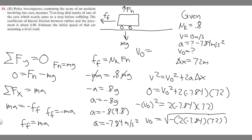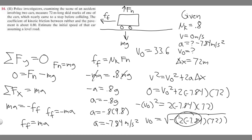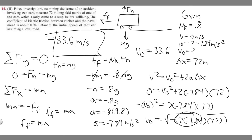Taking the square root of all of that, you get v sub 0 equals approximately 33.6 meters per second. So the initial speed is 33.6 meters per second. Hopefully you found this useful.